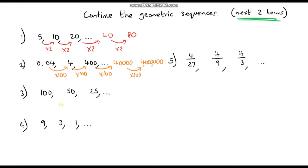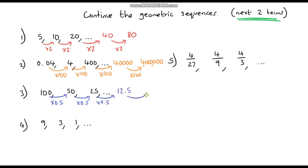To go from 100 to 50, I'm dividing by 2 or multiplying by 0.5. Again multiplying by 0.5, so I need to find half of 25: that gives me 12.5. And then multiplying by 0.5 again gives me 6.25.